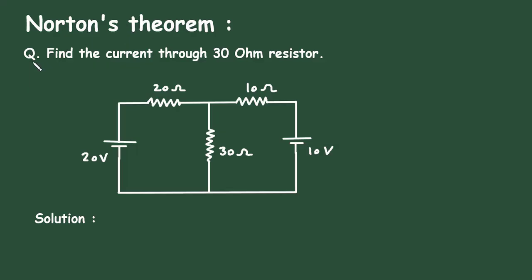Norton's theorem question: find the current through the 30 Ohm resistor. In this circuit we have to find the current through this 30 Ohm resistor by using Norton's theorem.